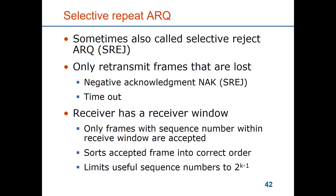The receiver has a receiver window and only frames with sequence numbers within that window are accepted. It then sorts the accepted frames into order — this is the difference from go-back-N, because frames are not delivered in the same order as they were sent. There is a technicality: if you have k bits of sequence number you can only use half the possible span for your window. For 8 possible sequence numbers (0 to 7) you can only use a sending window of 4 frames, otherwise you risk misinterpreting received frames and duplicate frames would be accepted by mistake.